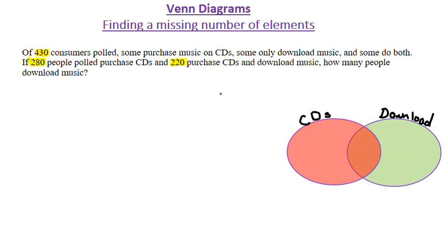As we discussed before, when I fill the Venn diagram, I'm going to start from the inside out. So I'm going to start with the intersection. I know that there are 220 people here who do both. So 220 is the number of elements in the intersection — there are 220 individuals who do both.